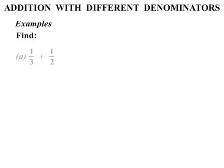Let's look at some further examples. The first one: one third plus one half. The denominators are different, so let's think — what number do both three and two go into? They both go into six. If you get stuck, you can always multiply them: three times two is six.